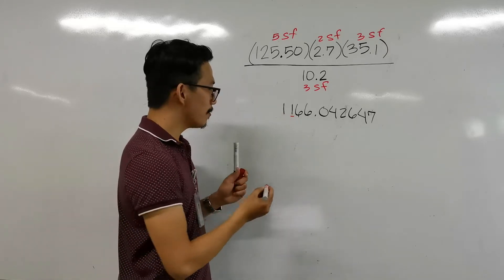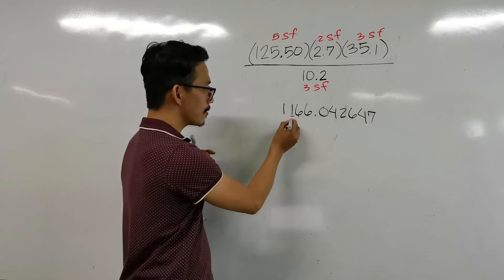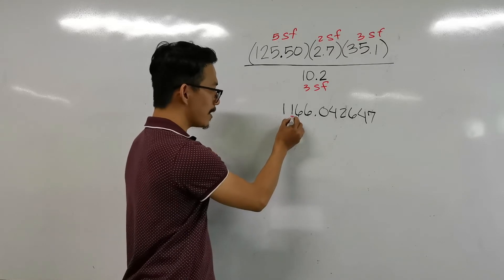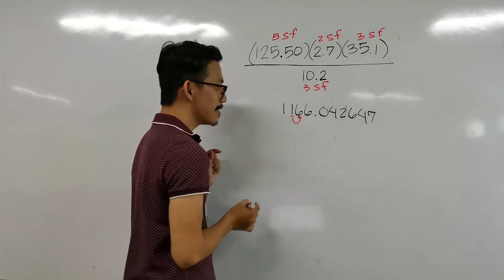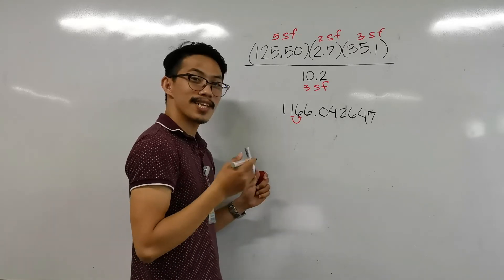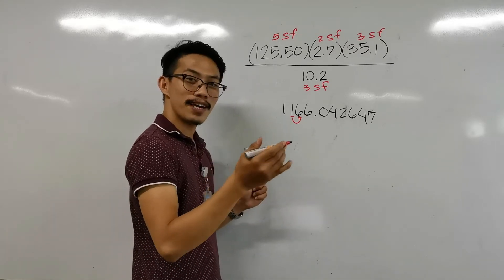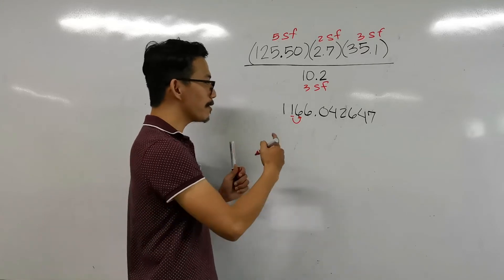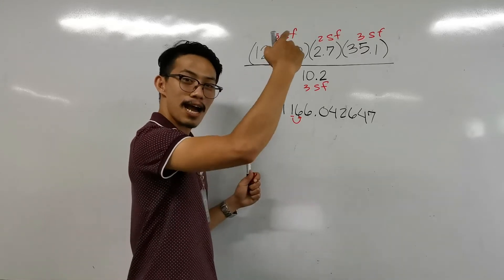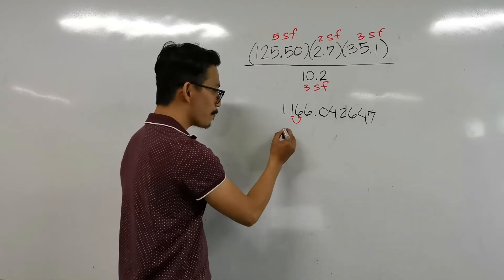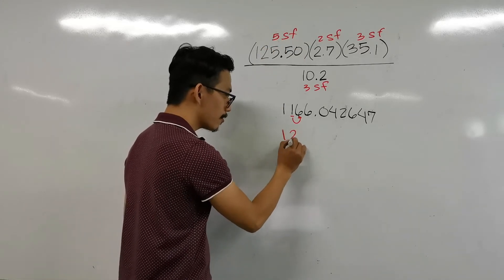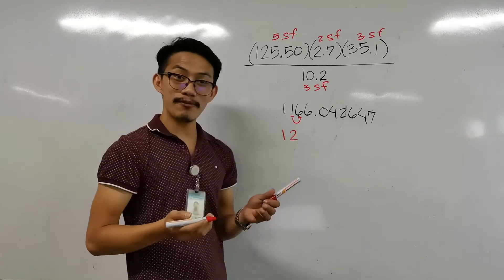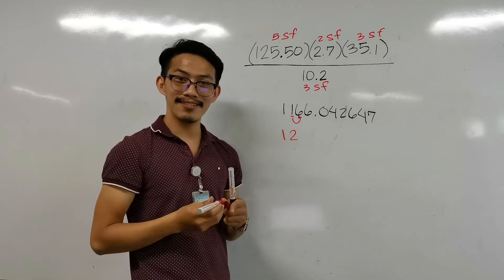Take note of the number next to the first two significant digits — that is 6, which is greater than 5. So we will round up. Our final answer must be 1,200 — we write zeros as placeholders, giving us 1,200.